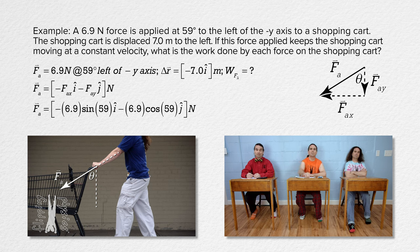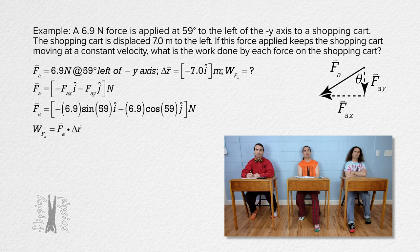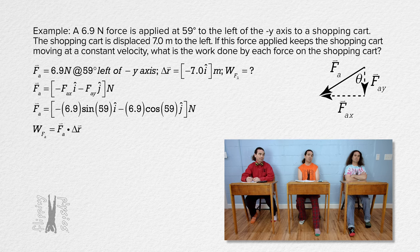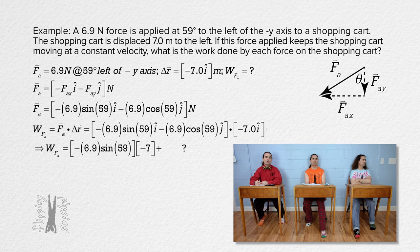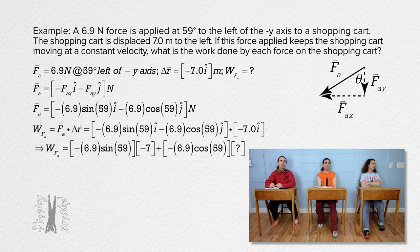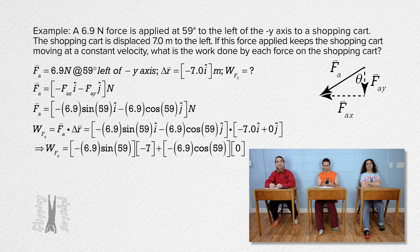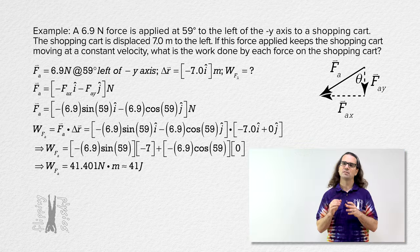Bobby, please determine the work done by the force applied from here. The work done by the force applied equals the dot product of the force applied and the object's displacement. Multiplying the i terms together gives negative 6.9 sine 59 times negative 7, plus the j terms — negative 6.9 cosine 59 times 0 — which equals zero, since i and j are normal to one another. That gives 41.401 Newton meters, or 41 joules with two sig figs. Very nice Bobby, you are correct. The work done by the force applied on the shopping cart is 41 joules.